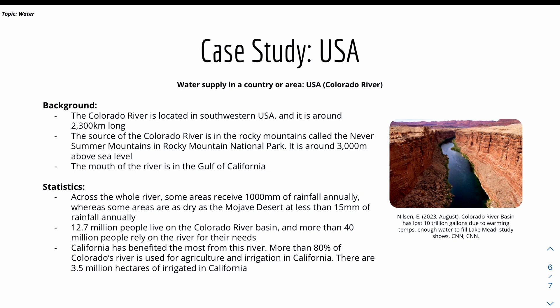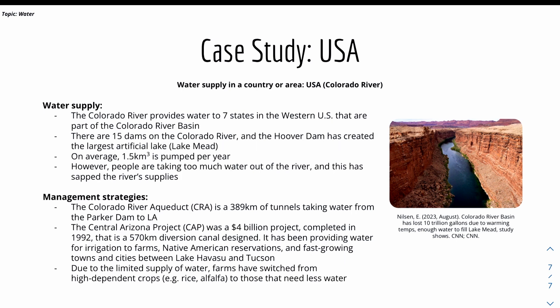California has benefited the most from the river, as more than 80% of the Colorado River is used for agriculture and irrigation there, with 3.5 million hectares of irrigated land. The river provides water to seven states in the western USA. There are 15 dams on the Colorado River, and the Hoover Dam has created the largest artificial lake. On average, around 1.5 km³ of water is pumped per year. However, people are taking too much water out of the river, which may cause river water levels to decrease and sap the river supply.